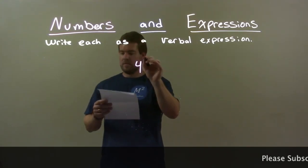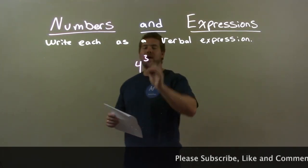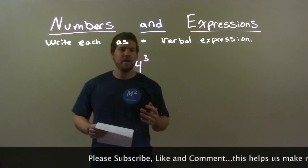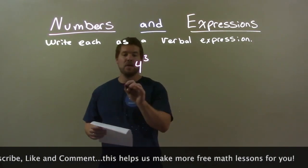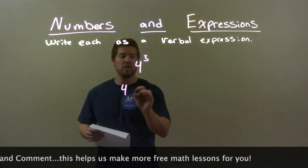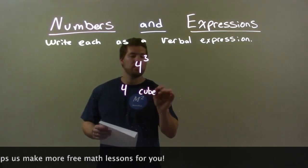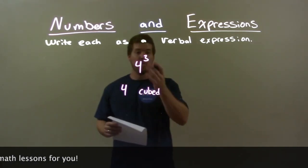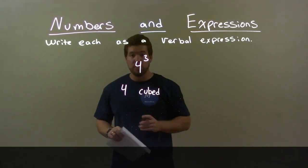4 to the 3rd power — 4 exponent 3. How do we write this? There are many ways to show it, and I'm going to show it like this: we have 4 cubed. Another way of writing this — 4 cubed.